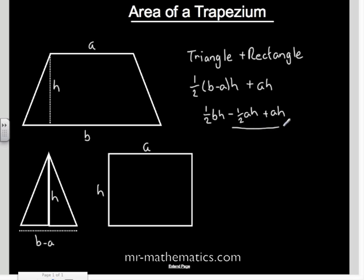And we are going to collect them two terms together. So we have a half BH plus a half AH.